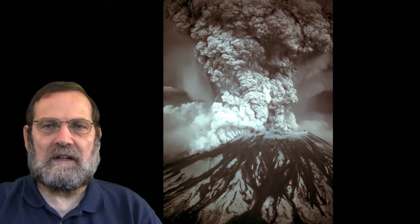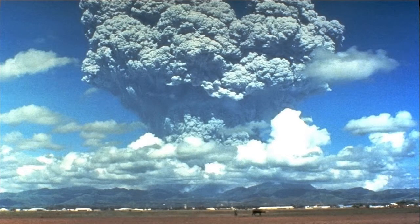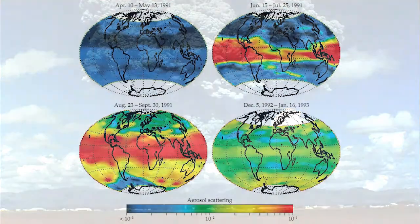Orogeny and epirogeny proceed slowly over many millions of years. In contrast, volcanism can have an explosive effect on climate. For example, when Mount Pinatubo in the Philippines erupted in June of 1991 after 460 years of inactivity, it spewed vast amounts of sulfur dioxide and fine particles into the upper atmosphere. These materials quickly spread over most of the world and formed a haze of aerosols in the stratosphere that reflected enough sunlight to lower global temperatures by as much as half a degree Celsius for nearly two years.